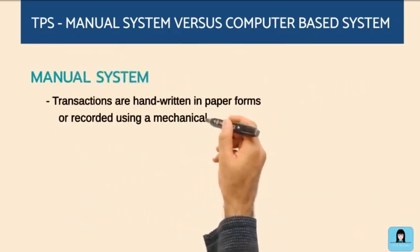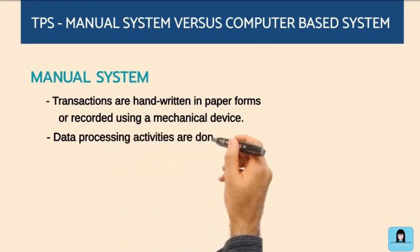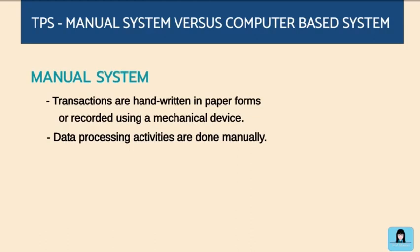transactions are handwritten on paper forms or recorded using mechanical devices such as typewriters and bundy clocks. Data processing activities such as sorting documents by serial number, summarization of transactions, and posting of transactions to journals and ledgers are done manually.